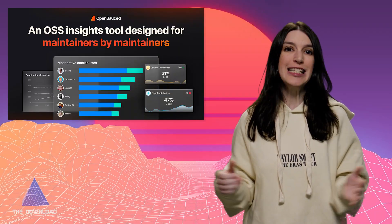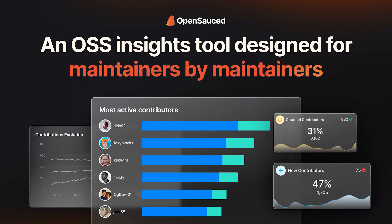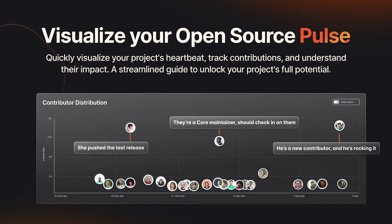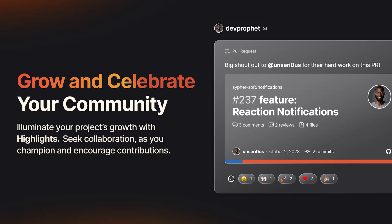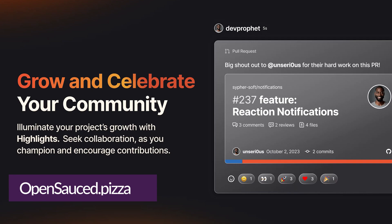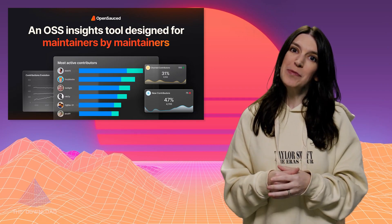Moving on to some launch celebrations, I wanted to first of all congratulate our pal B Ducky on the Product Hunt launch of OpenSauced, which is his tool for maintainers by maintainers. It's designed to help you optimize your open source project with deep insights. Seriously, if you have an open source project, you've got to check out OpenSauced. It's fantastic. It also has the greatest URL ever, which is opensauced.pizza. I've got that link down below. Congrats, B Ducky.